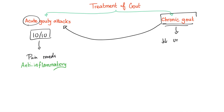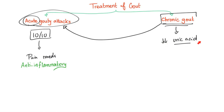Should you decrease uric acid during the acute attack? No. If you decrease uric acid during an acute attack, you might worsen the attack. You only decrease it when the patient has no pain. Even in chronic gout, when you try to decrease uric acid, don't decrease it too much too rapidly — if you do, you can precipitate an acute gouty arthritis attack.